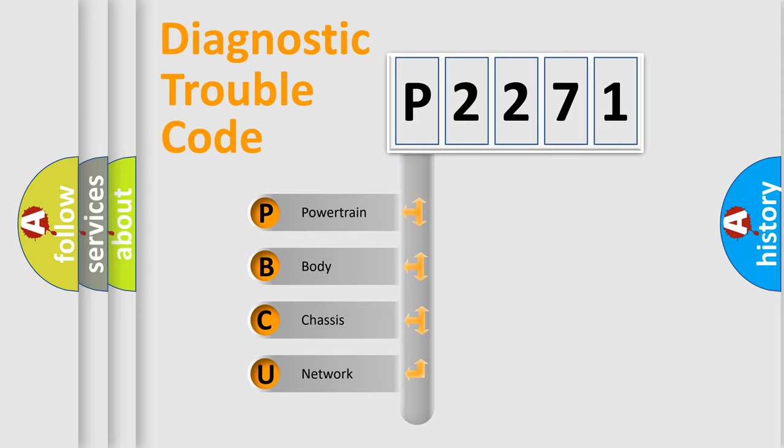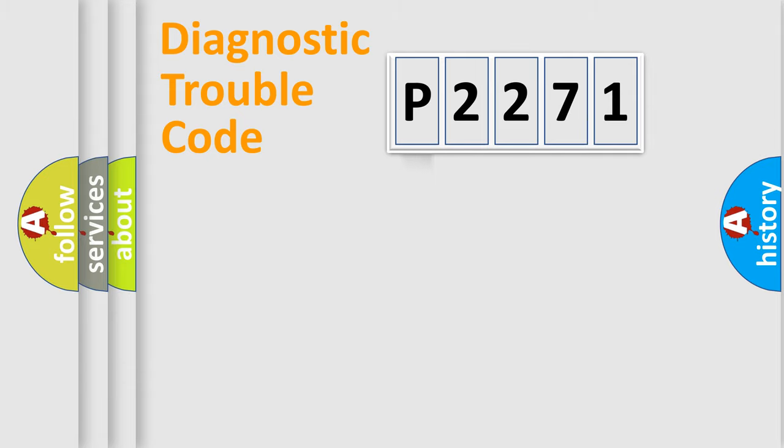We divide the electric system of automobile into four basic units: Powertrain, Body, Chassis, and Network. This distribution is defined in the first character code.